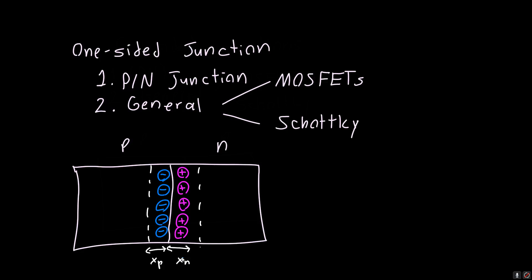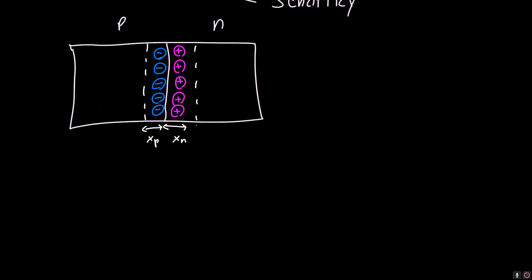But what happens when the doping on one side gets really high? Let's say for example that the doping here is 10 to the 19 acceptors per centimeter cubed on the P side, and the doping on the N side is only 10 to the 15 per centimeter cubed. What is the depletion region going to look like?